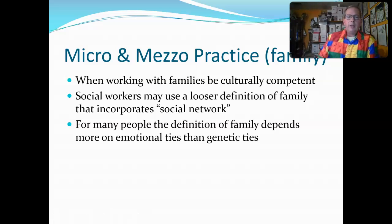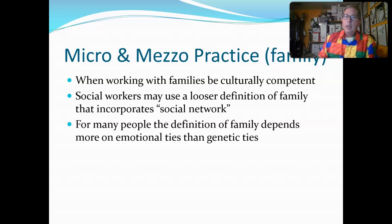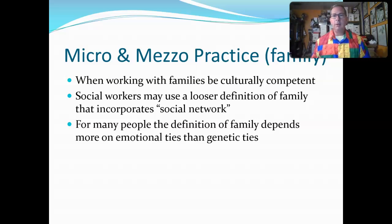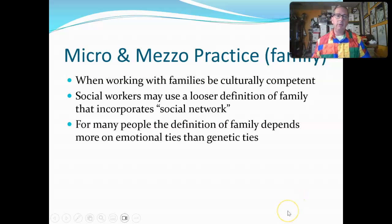When working with families, we need to understand that a person's definition of family may be slightly different than ours. Our definition of family very closely relates to our emotional ties, much more than our genetic ties. For example, you probably have some cousins you're closely connected with and emotionally care about, and then other cousins you're far less emotionally tied to — where your friends are much more important to you than those cousins simply because they haven't been a large part of your life. When clients say 'this person is my family,' we need to pay attention to emotional ties much more so than genetic ties.